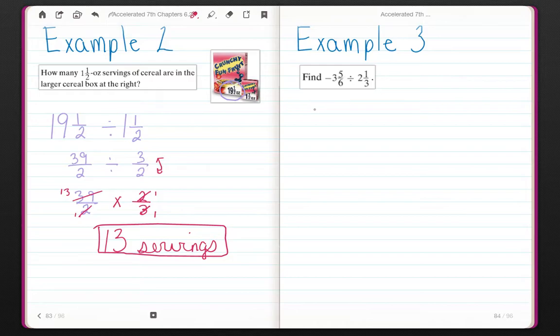Example 3. Find negative 3 and 5 sixths divided by 2 and a third. Again, step 1, change them into improper fractions. 6 times 3 is 18. 18 plus 5 is 23. Negative 23 sixths divided by 3 times 2 is 6 plus 1 is 7, 7 thirds.